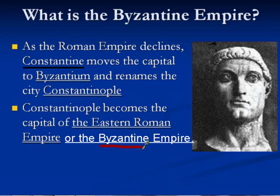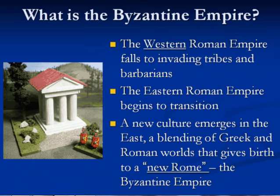When we think about the Byzantines, we have to think about the preservation of Roman culture and Roman knowledge, which we'll get to later. The western part of the Roman Empire falls — it gets invaded by different tribes and barbarians. For a long period afterwards, that western part of Europe is almost like in a dark age after the Roman Empire collapses.